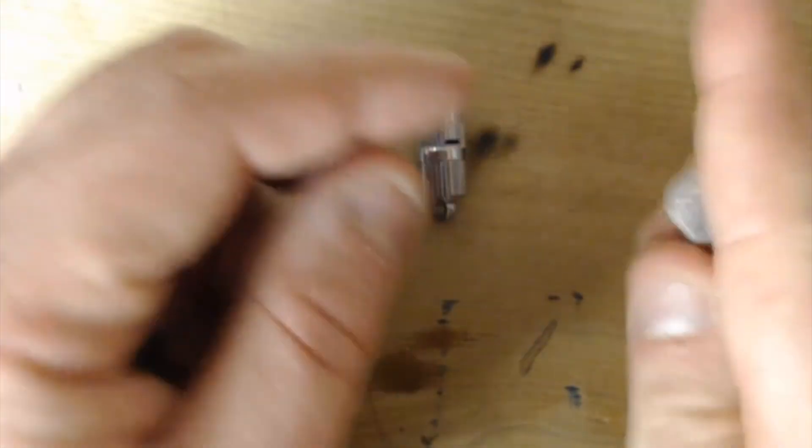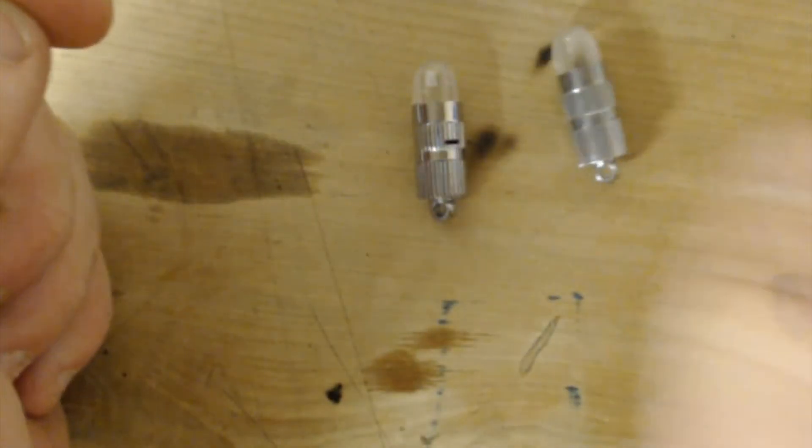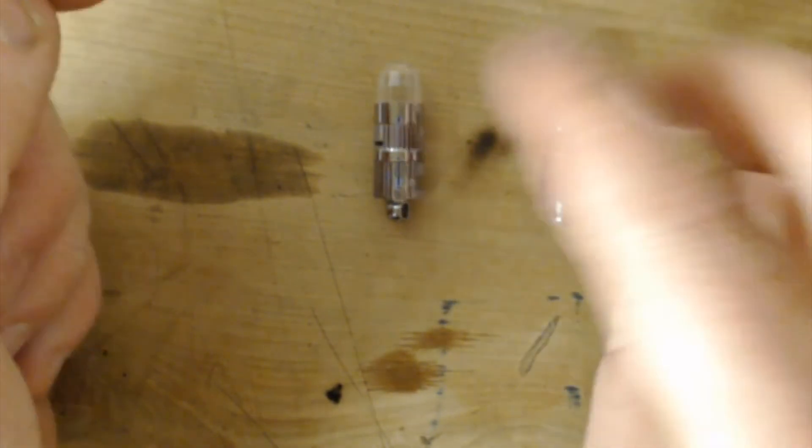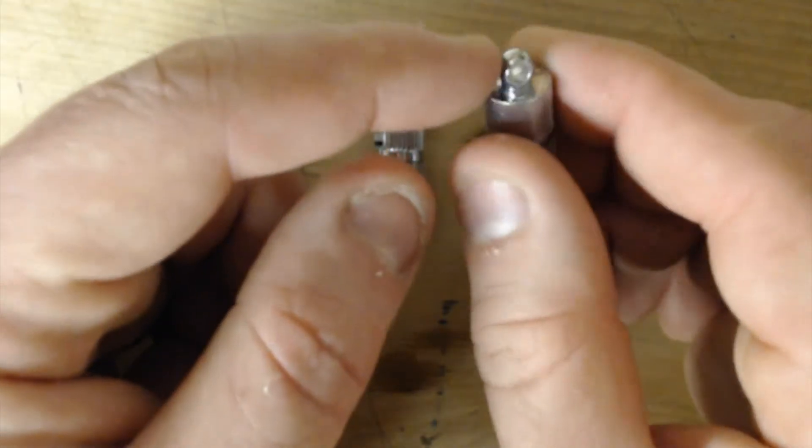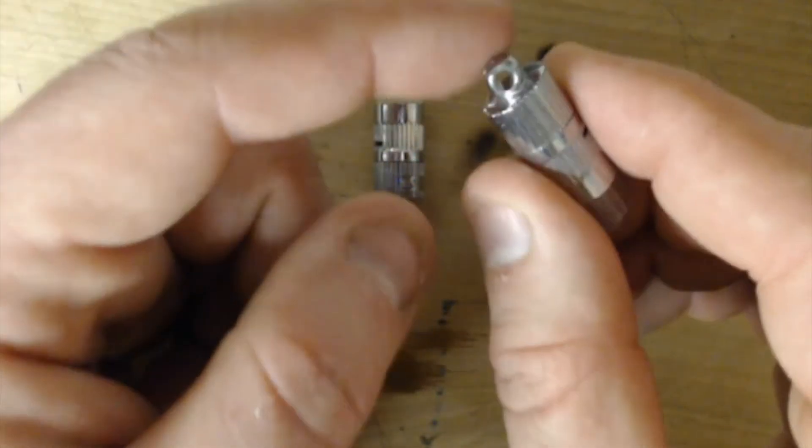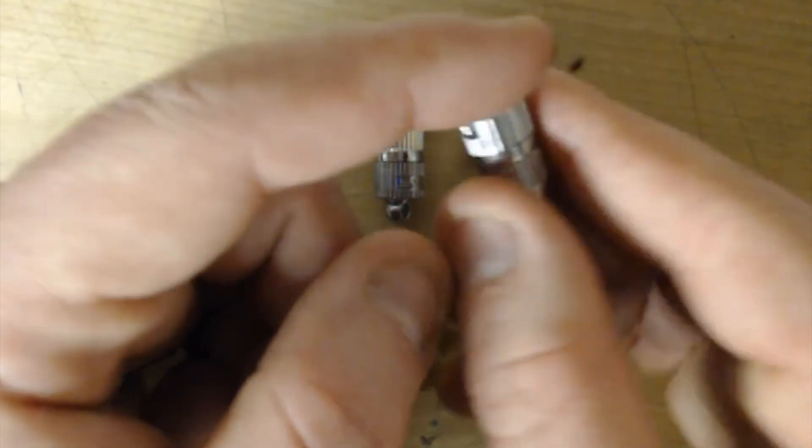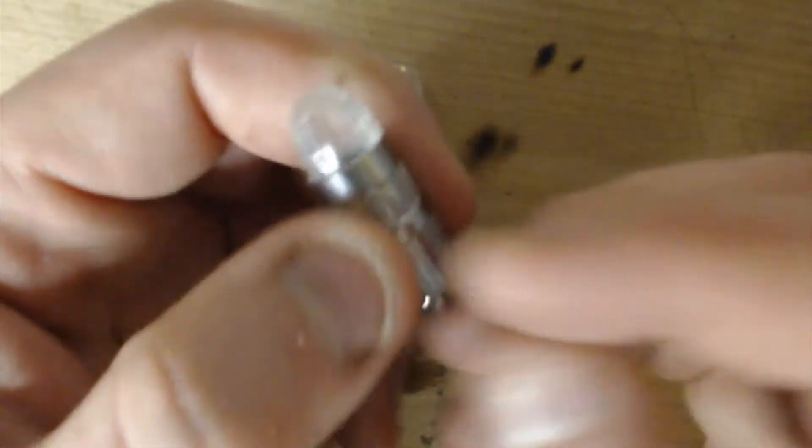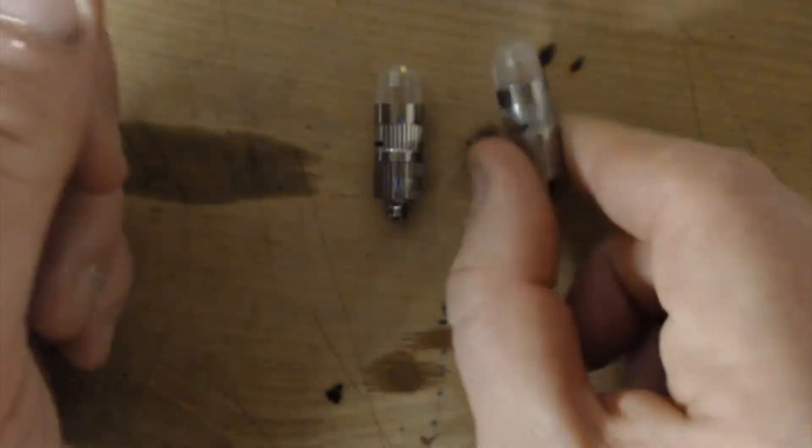And the other really neat thing is that when you pull the LED out of it, you're still left with these really neat looking cases. They kind of look like bullets or rockets. So you can cut these little nibs off.